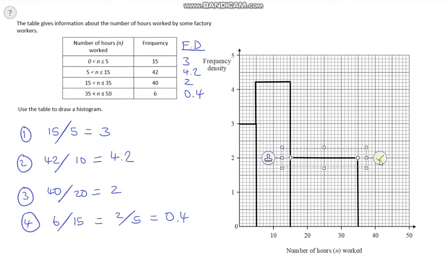And finally, just to finish it off. 35 all the way up to 50, so we're going all the way to the end. We're going up to 0.4, so that's going to be there. Let's just finish that off by going across, and we're done. We've constructed our histogram again using frequency density.